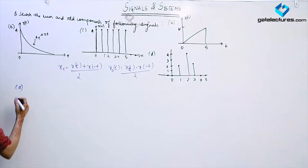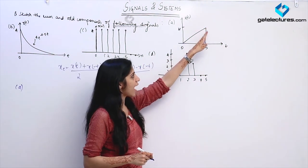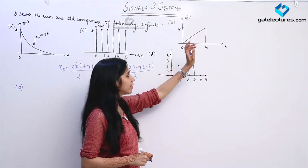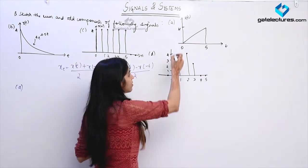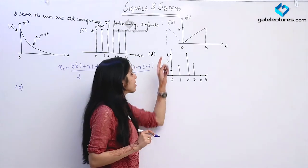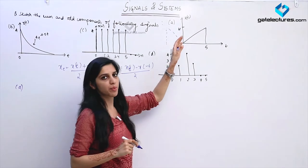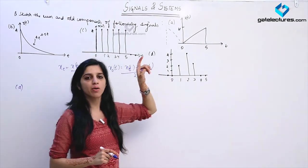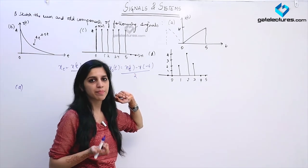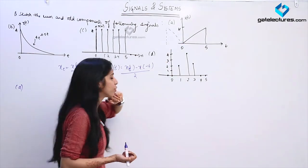Looking at the first part: this signal consists of a ramp signal and a step, and the final value of the signal is 4. When I just reverse it in time, I obtain something like this — this is the time-reversed signal. When I add these two signals and divide by 2, only the amplitude value is going to be affected; I am not performing any time-scaling operation.